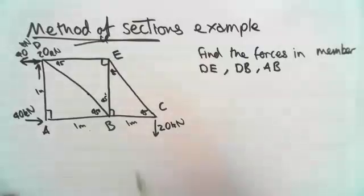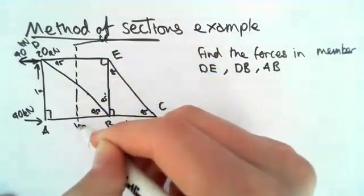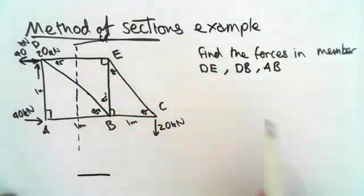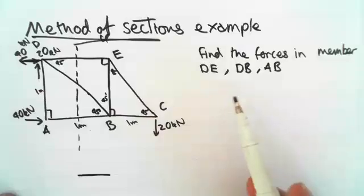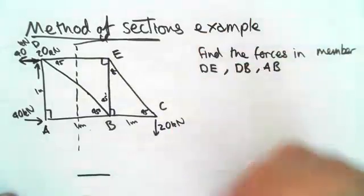So what we can literally do is, for the method of sections, we can make a section here and then split it up. So this would be the ideal section because we want DE, DB, and AB, since they all go through this section, like we're cutting through all of them.